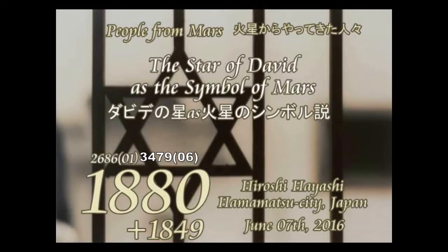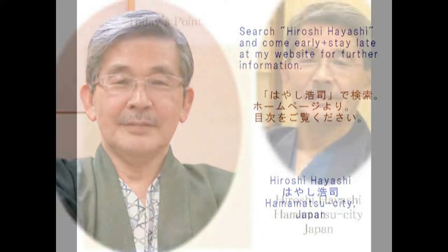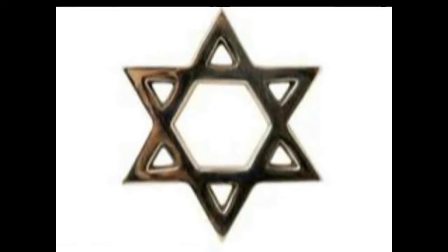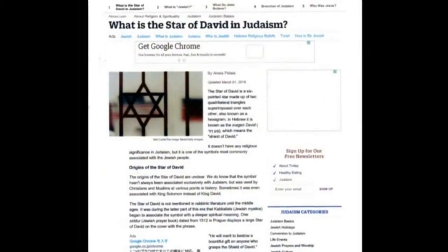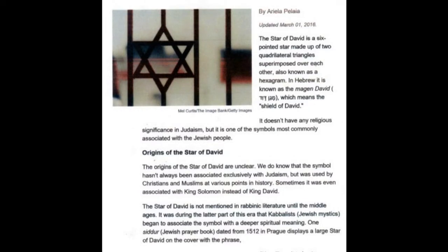According to the official website of Judaism, it states the following about the origins of the Star of David: it doesn't have any religious significance in Judaism, but it is one of the symbols most commonly associated with the Jewish people. The origins of the Star of David are unclear. The symbol hasn't always been associated exclusively with Judaism, but was used by Christians and Muslims at various points in history. Sometimes it was even associated with King Solomon instead of King David.